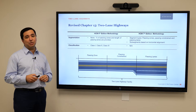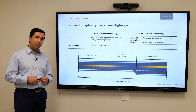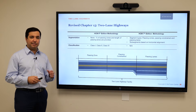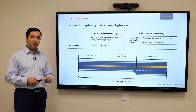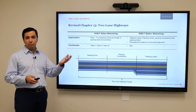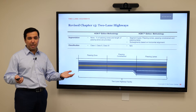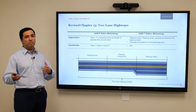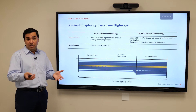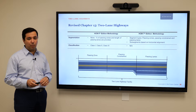Another big addition is that we have gone away from the classification of two-lane highways. Previously, we had Class 1, 2, and 3 of two-lane highways, and depending on which classification you picked, the performance measures and service measure were different, and the level of service would change. It was pretty controversial to select the appropriate class, so that whole classification system has gone away. We don't need to deal with any classes of two-lane highways.